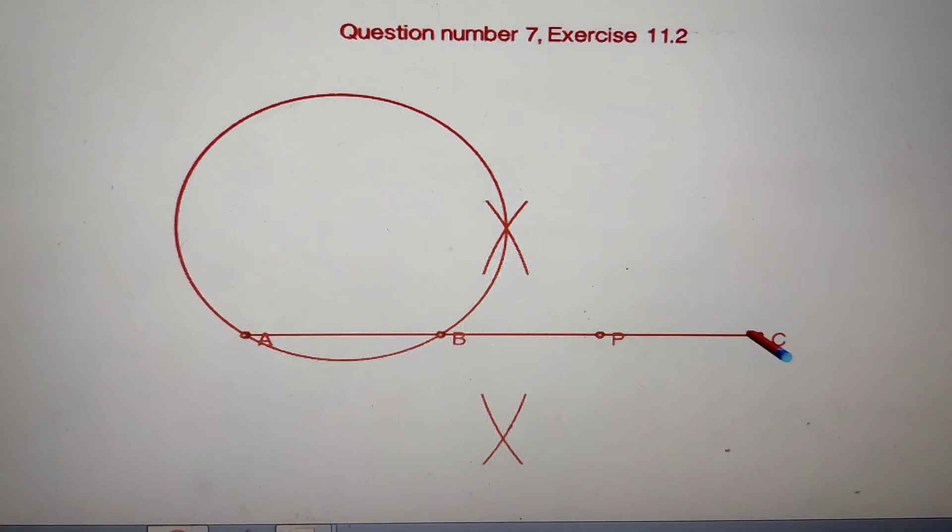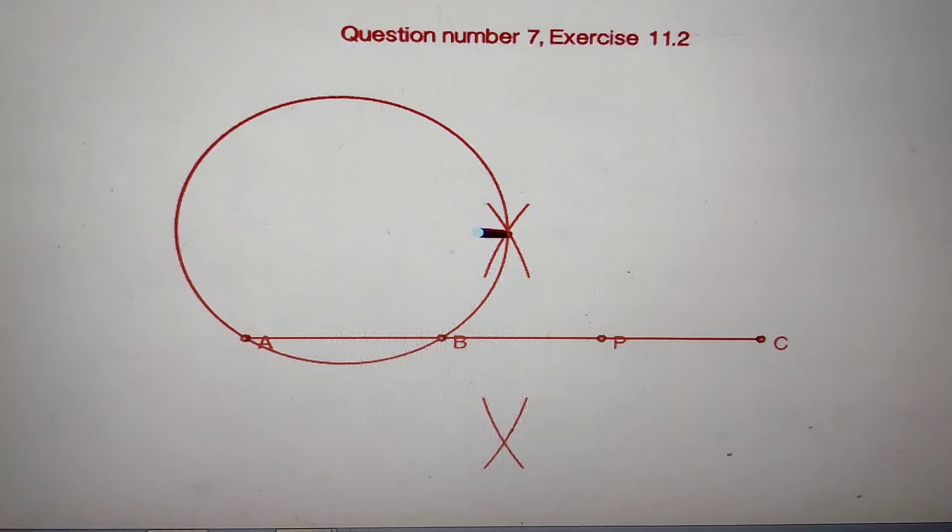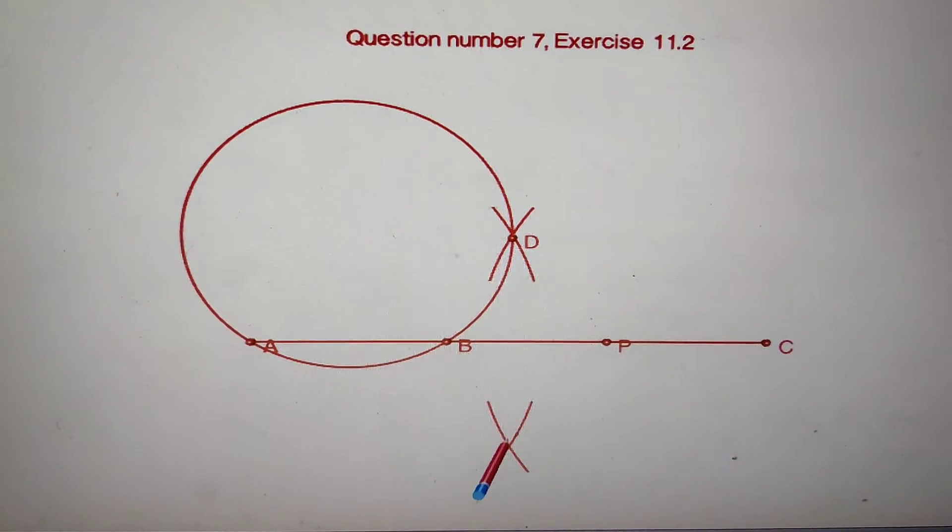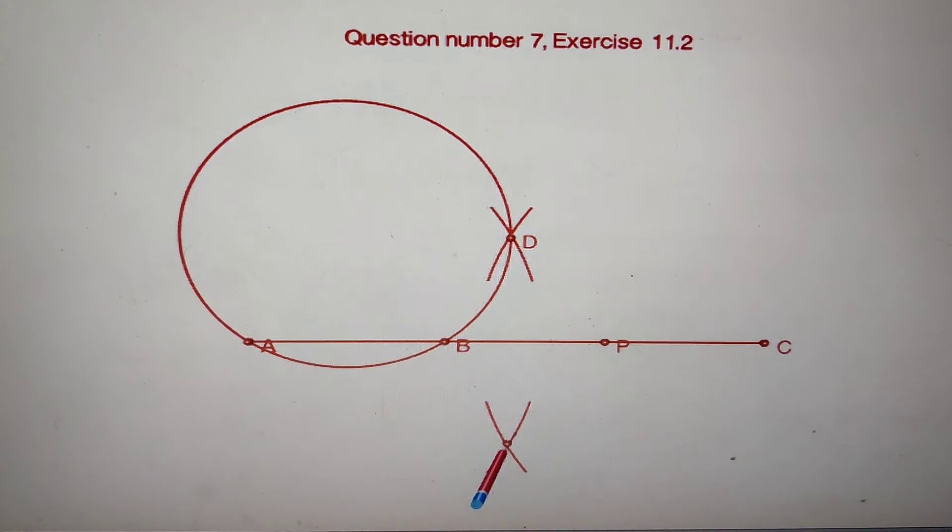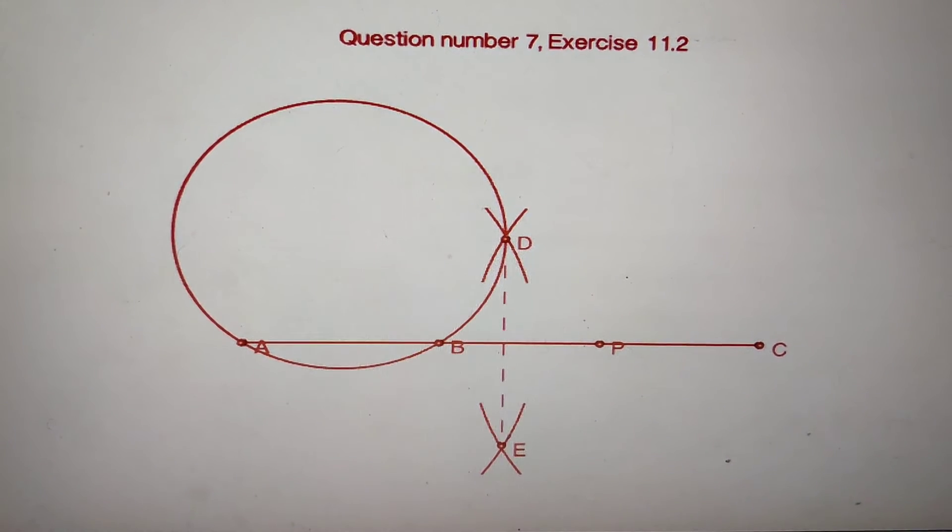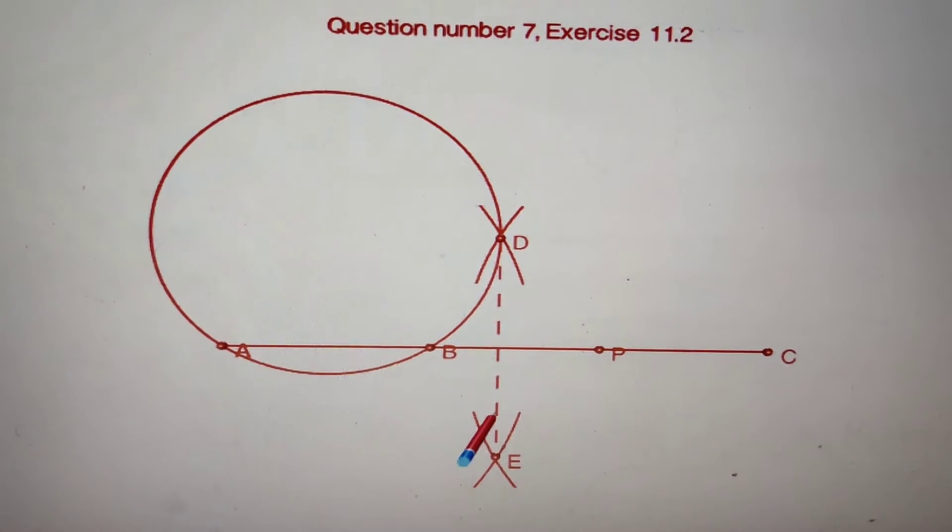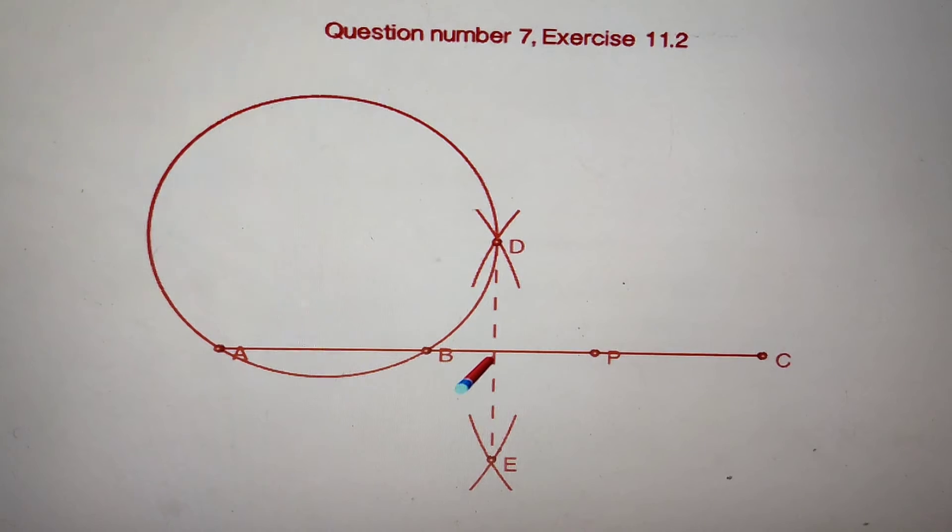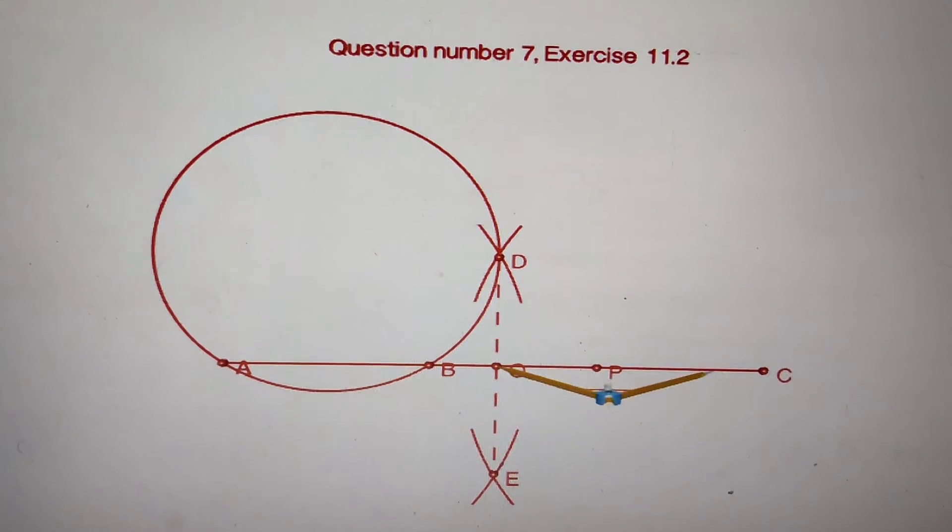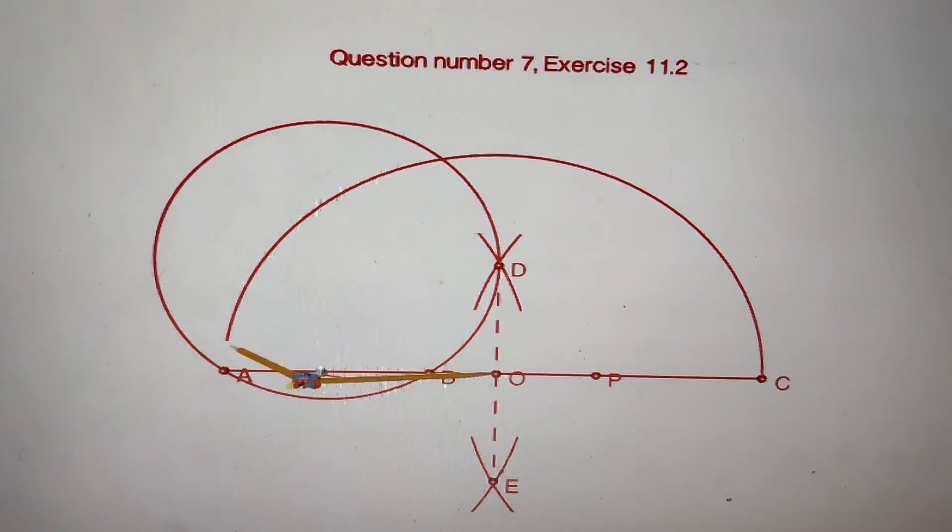Join these perpendicular bisectors. A point meets at the line AC. That will be the center of a new circle. This is a perpendicular bisector. This point we can take as O. Now draw a semicircle taking radius OA or OC.